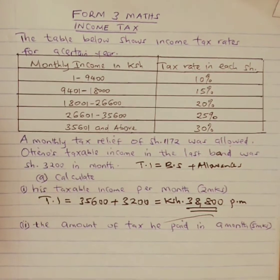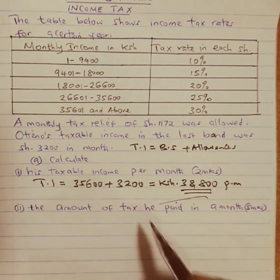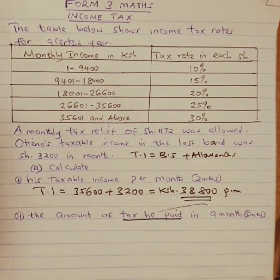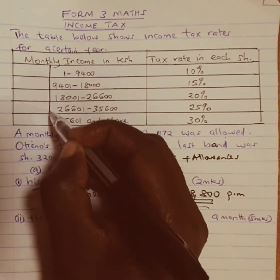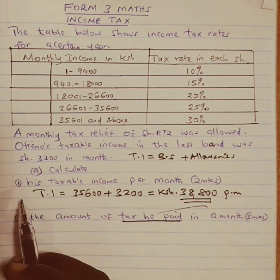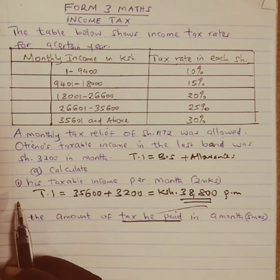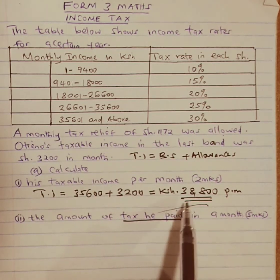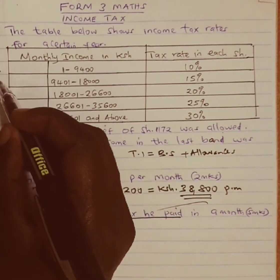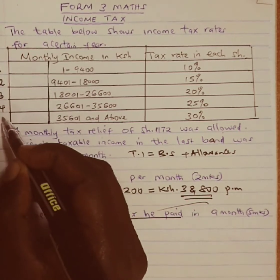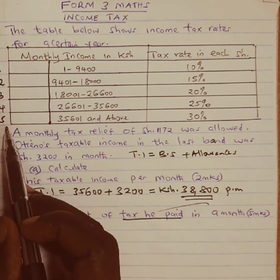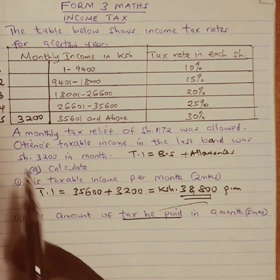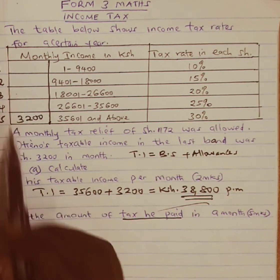Part A(ii): we are told to calculate the amount of tax he paid per month. We begin by calculating the amount of income that is going to be taxed in each bracket. We know our amount lies in the last bracket. We have the first, second, third, fourth, and fifth slab. In the last bracket we are told the taxable income was 3,200. How much was taxed in the first, second, third, and fourth bracket?